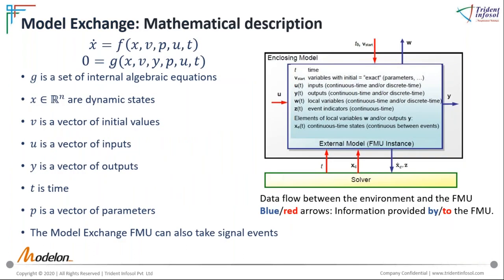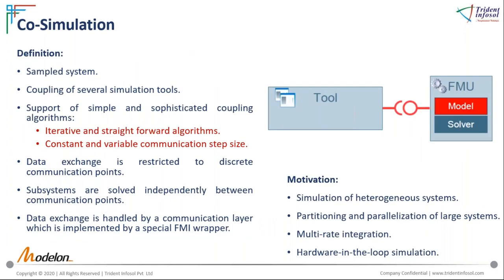The Model Exchange FMU is mathematically described with a set of internal algebraic equations and dynamic states. The model contains vectors of states, parameters, inputs, outputs, and time. In the diagram, red arrows show information flowing into the FMU and blue arrows show information flowing out. Inputs, initialization values, and continuous time states flow into the FMU, while outputs and local variables flow out. The solver is separate from the FMU; simulation time passes from solver to FMU, continuous time states flow from solver to FMU, and derivative time states pass back to the solver.